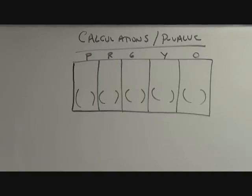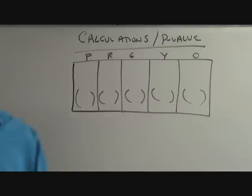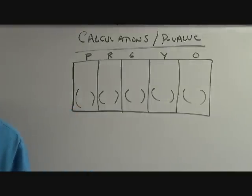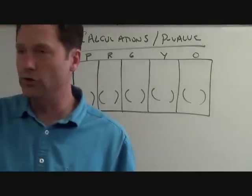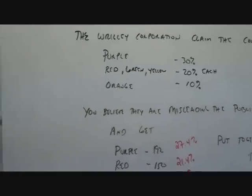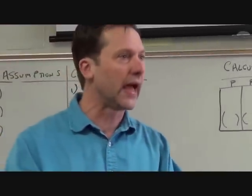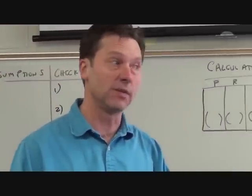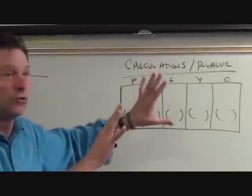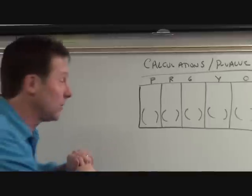We'll go into the calculations part of the hypothesis test — this is how we're actually going to do the comparison between what they said was true and what we got. We don't compare the percentages in a chi-squared test. We compare the actual counts — what we got versus what we were expecting. That's going to be a very common mistake: putting in 0.3s and 0.2s. No — you put the actual counts in here.